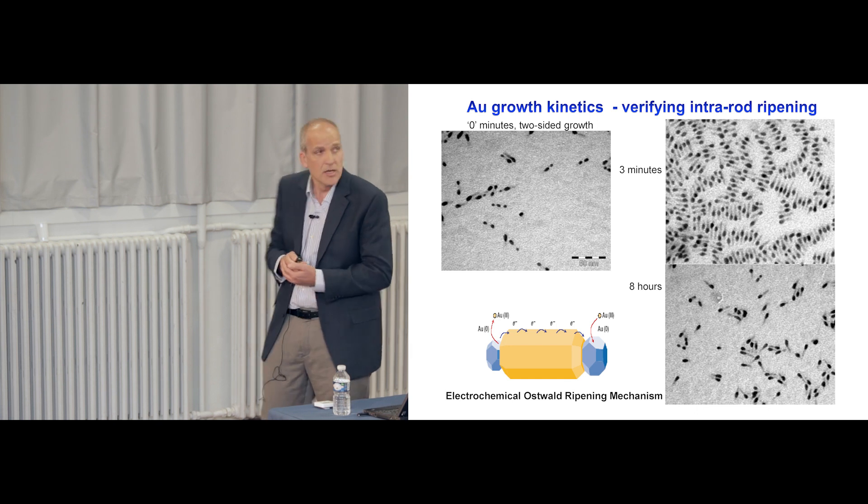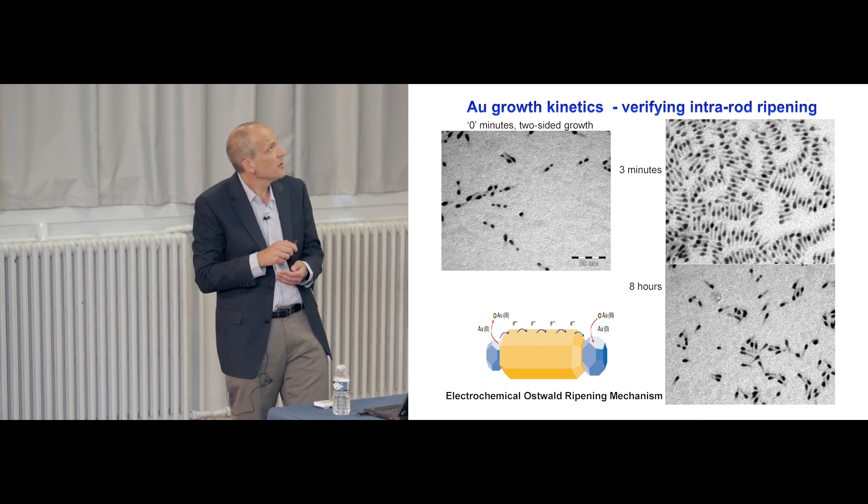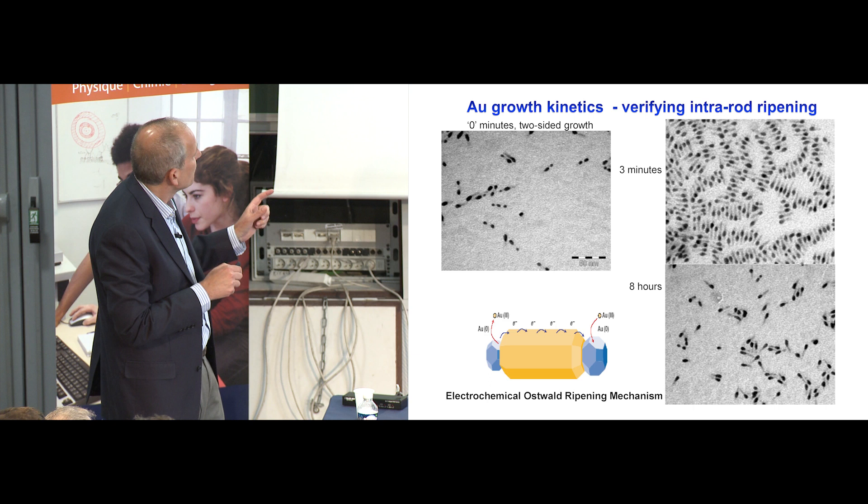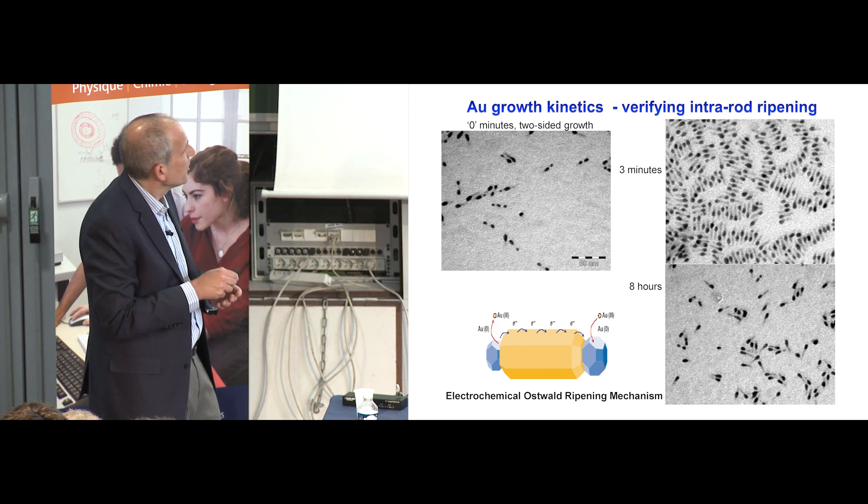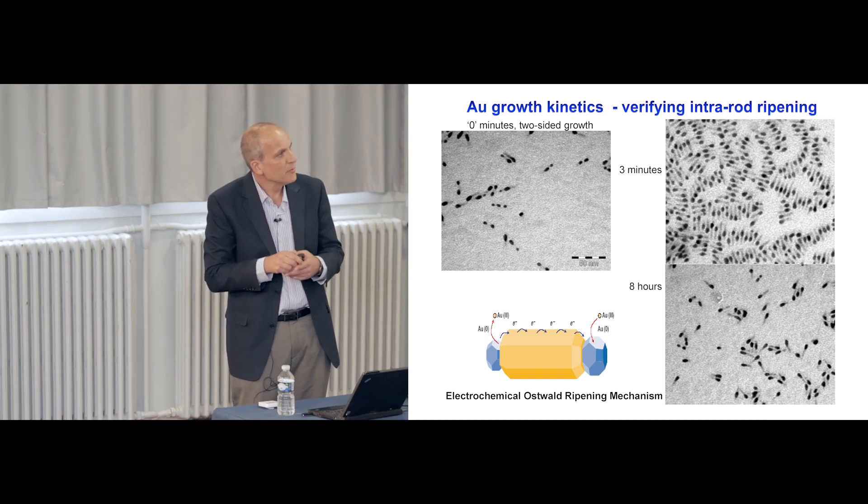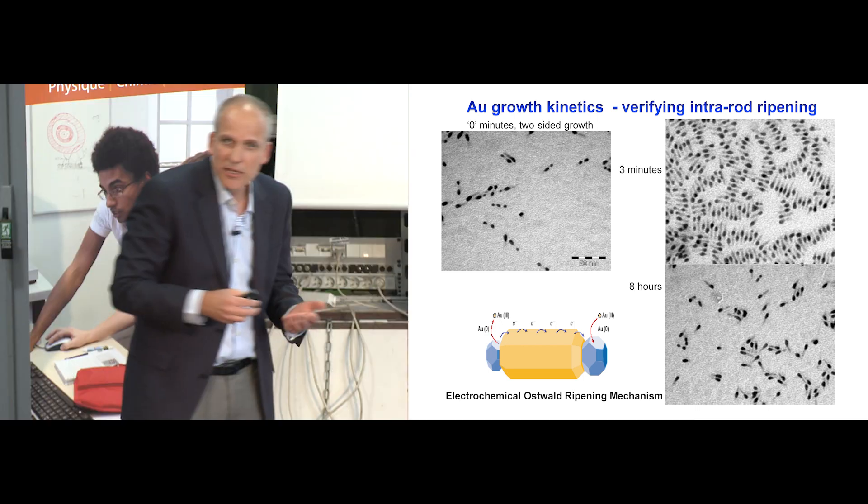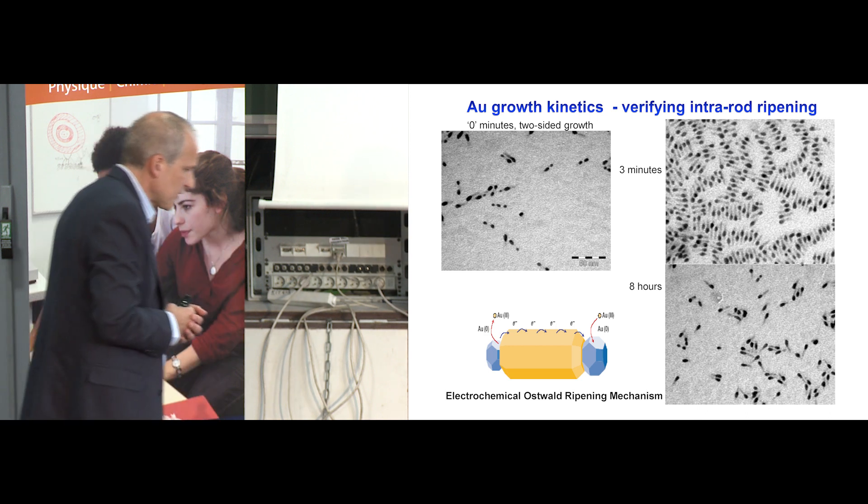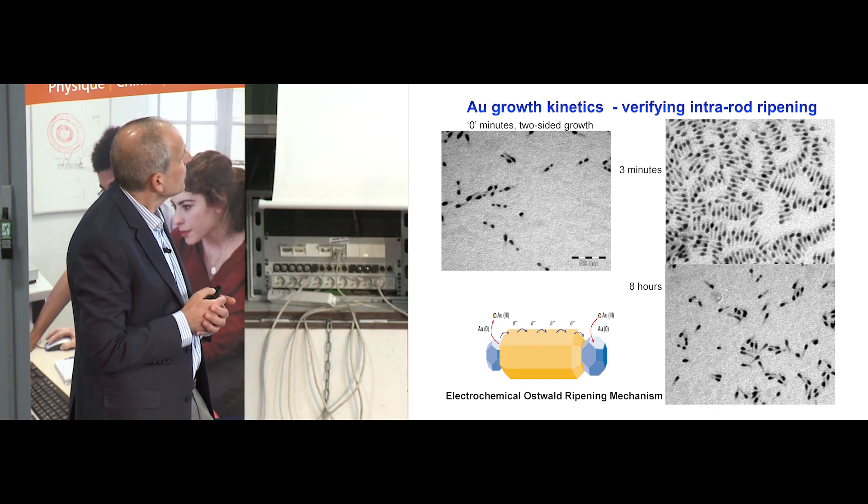And perhaps the best proof for that at the time was this experiment, which was carried out by Taleb, which at very early times could actually take an aliquot of a sample which had a large concentration, and you still see this two-sided growth. And after three minutes already, this stabilized into a very clear one-sided grown system, which remained stable in solution for eight hours. Namely, we needed the nanorod itself in order to mediate this ripening effect, and there was no ripening observed over many hours between different nanorods. And this establishes this mechanism and another piece of inspiration that we had from the work of Lewis.